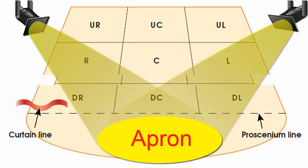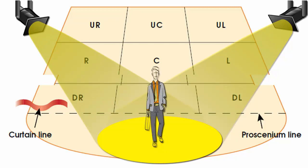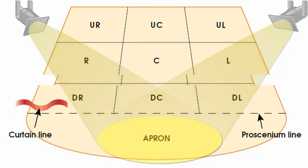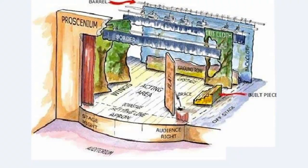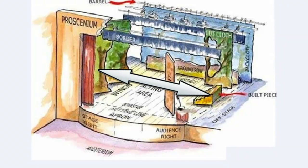An apron is a segment of the stage which protrudes through and beyond the proscenium arch. Traditionally, the apron was used by actors to break through the proscenium and directly address the audience in an aside, for example. This diagram shows the basic configuration for a proscenium arched theatre. The audience faces the stage, and wings sit by the left and right sides of the stage, used to store scenery, effects, and as waiting areas for actors.